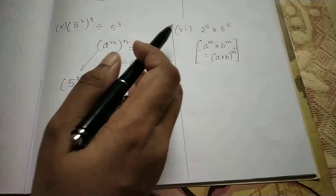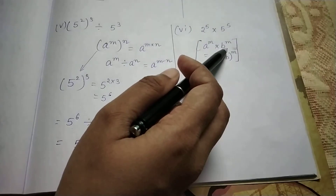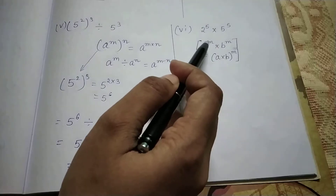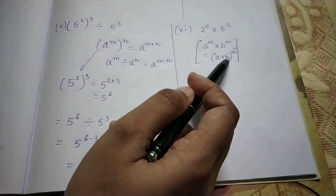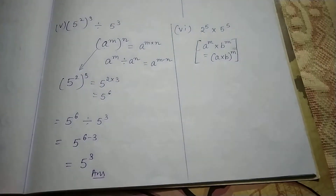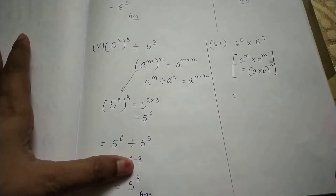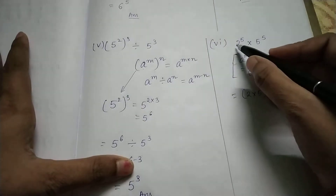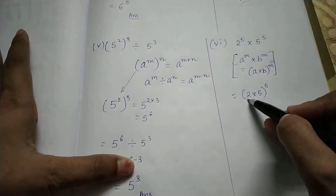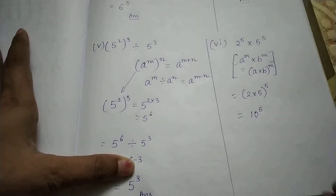Number 6: here I can see the base is not same but the power is same. Recall the law: if the base is not same but the power is same, take the bases in a bracket multiplied together and take the common power outside — a to the power m into b to the power m equals a into b, in a bracket, to the power m. So we multiply 2 into 5 and take the power 5 common: 2 into 5 in a bracket to the power 5. Multiplying 2 into 5 gives 10, so the answer is 10 to the power 5.